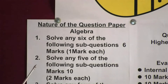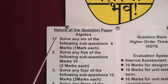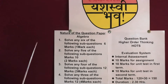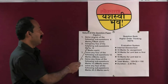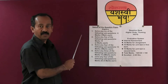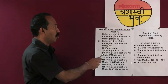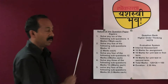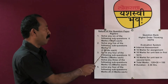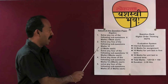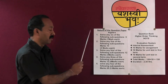Algebra: in all there will be 5 questions, and an internal option for each question will be given. Question 1: solve any 6 of the following sub-questions, with a weightage of 1 mark each — total marks allotted is 6. Question 2: solve any 5 sub-questions, with a weightage of 2 marks each — total weightage is 10 marks.